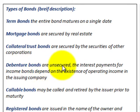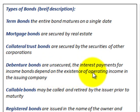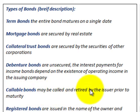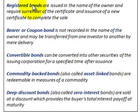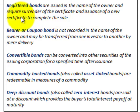Debenture bonds are unsecured. Income bonds — the interest payments depend on the existence of the operating income of the issuing company. Callable bonds may be called and retired by the issuer prior to their maturity date. Registered bonds are issued in the name of the owner and require the surrender of their certificate and the issuance of a new certificate to complete the sale.